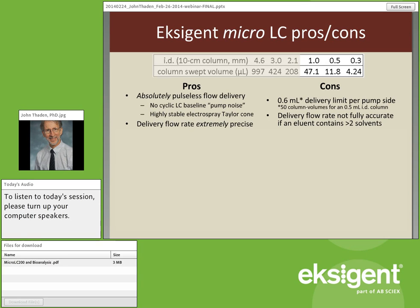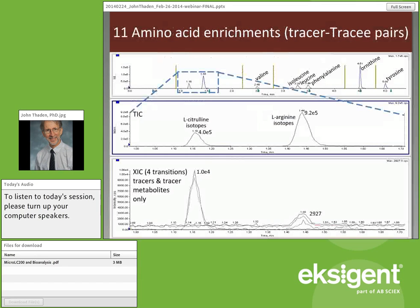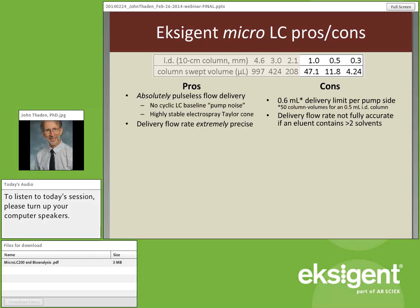The pros of micro-LC systems are significant. First, there is no pump pulsation — these pumps do not reciprocate like conventional HPLC pumps. They're like a large syringe pump: no push-pull-reload cycles. This means no pump noise, and the electrospray Taylor cone is extraordinarily stable — almost a deciding factor for MS work. The delivery flow rate is extremely precise, in part because of the pump design and also the very small void volume of these systems. Our system void volume (excluding the 11.8 µL column swept volume) is approximately 2.4 µL.